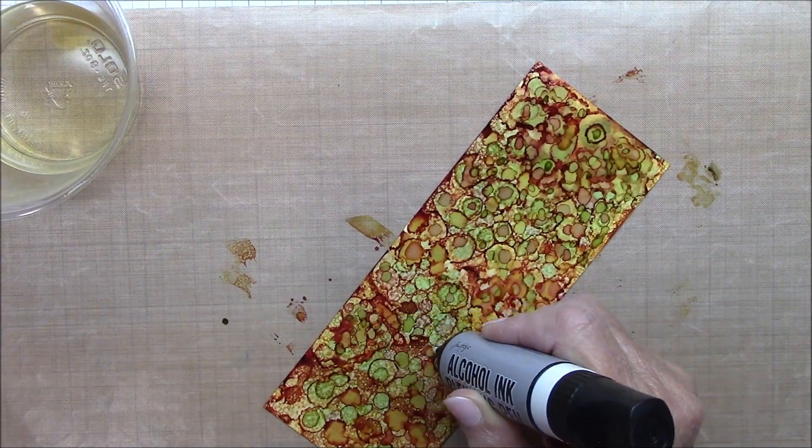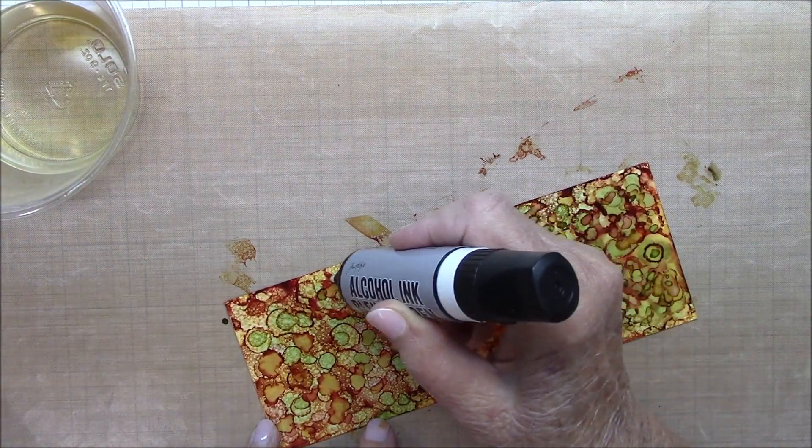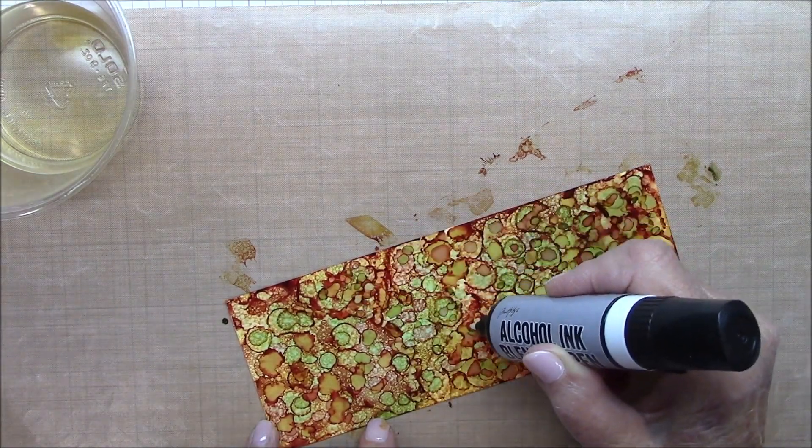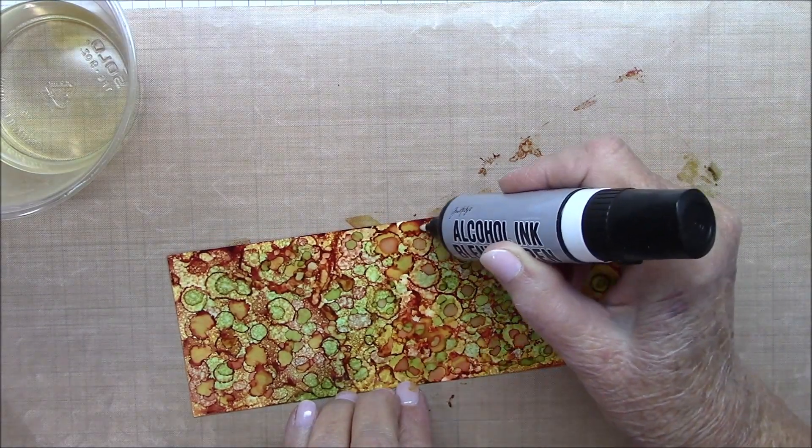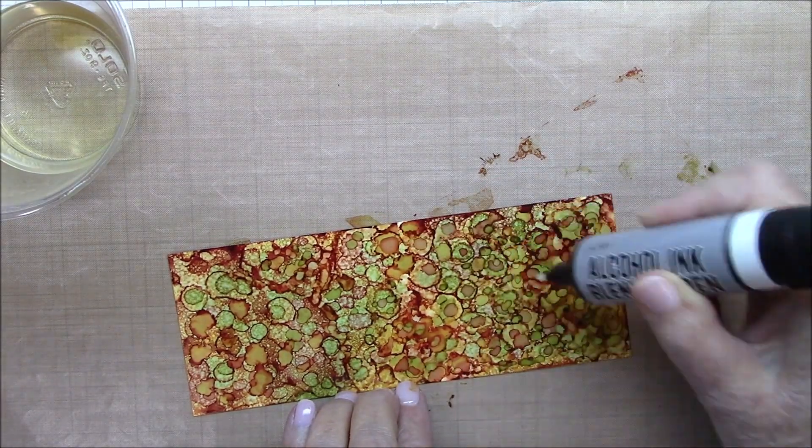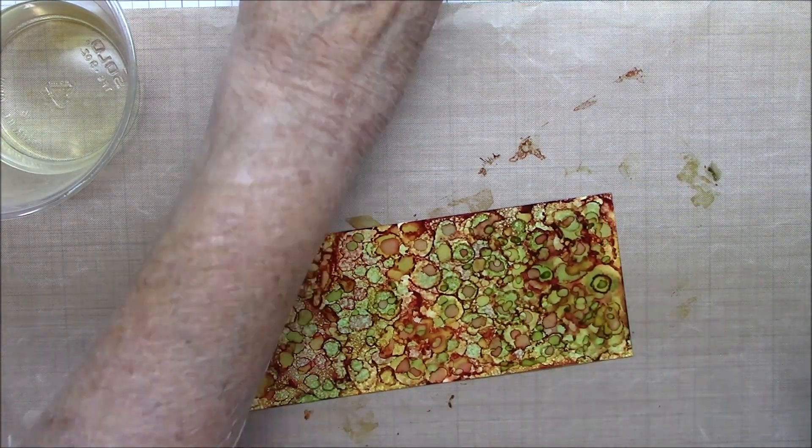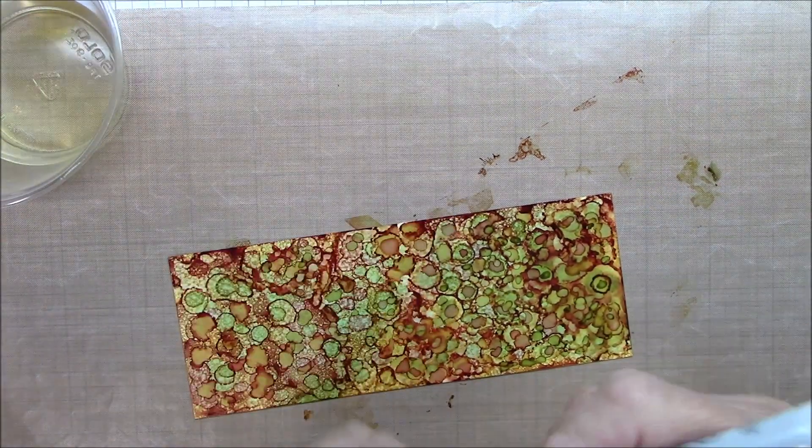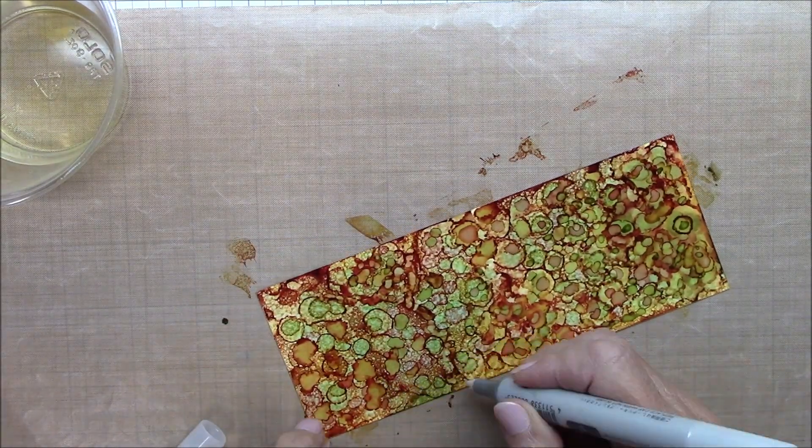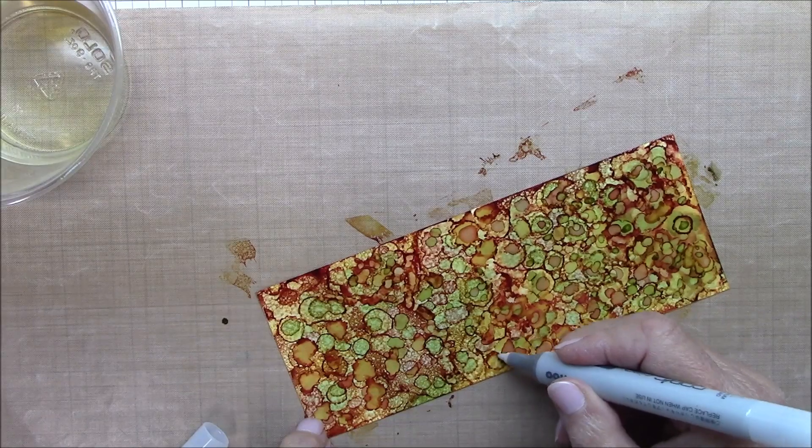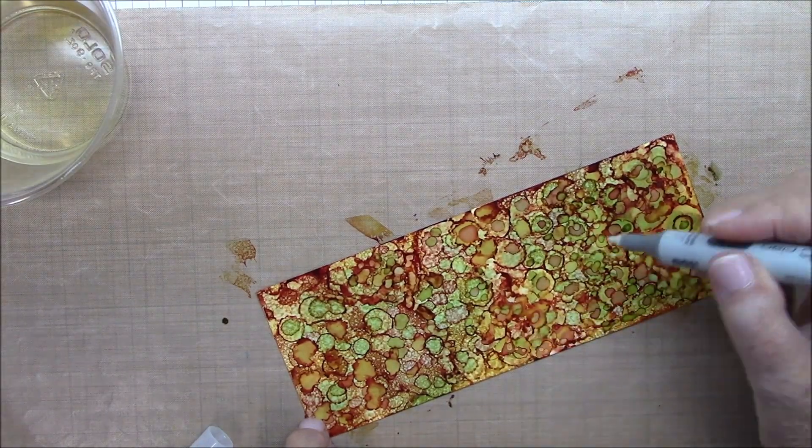Now I like to take my blender pen, which does have blender solution in it, and so it's just clear. And it is really good to break up concentrations, narrow concentrations of color that you don't want to be quite so intense, like these veins again. So I'm just using the smaller tip. And now I'm going to do the same with my Copic marker. It's even smaller, so it breaks it up even more.